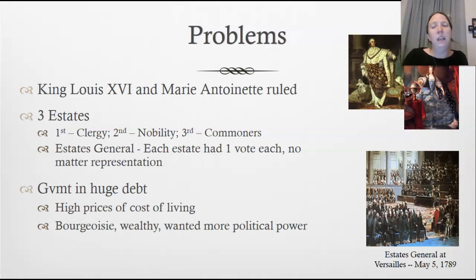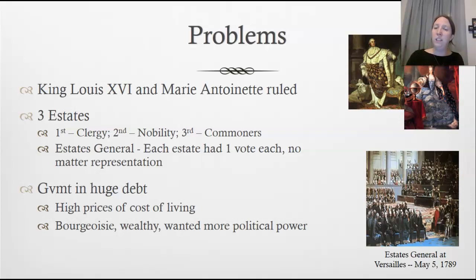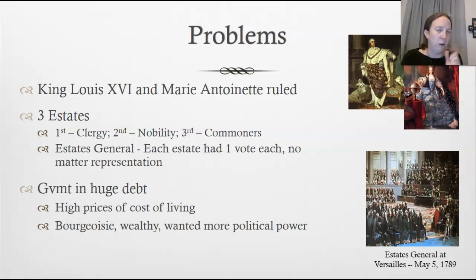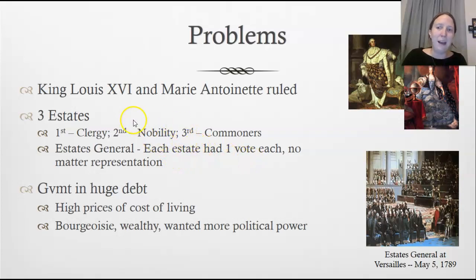Why was France in such bad shape? King Louis the 16th and Marie Antoinette were king and queen, and society was divided into three estates. The first was the clergy, the second the nobility — both representing about 1% of the population. The third was the commoners — 98% of the population. However, when they gathered in the Estates-General, each estate had one vote, regardless of representation.